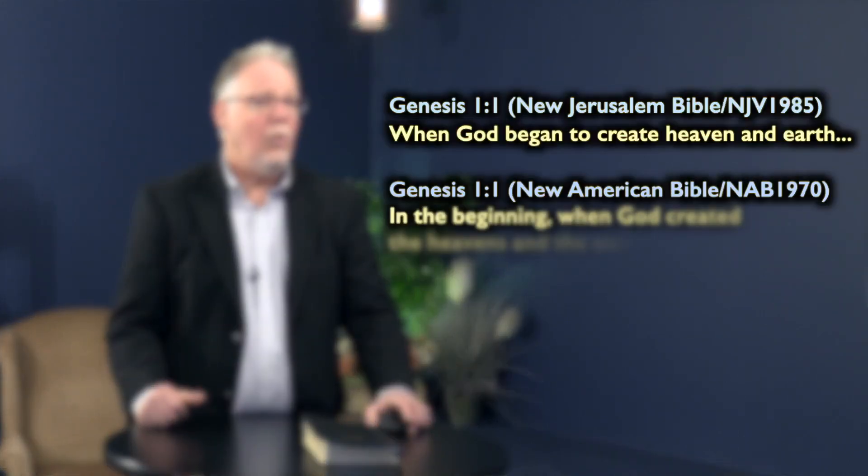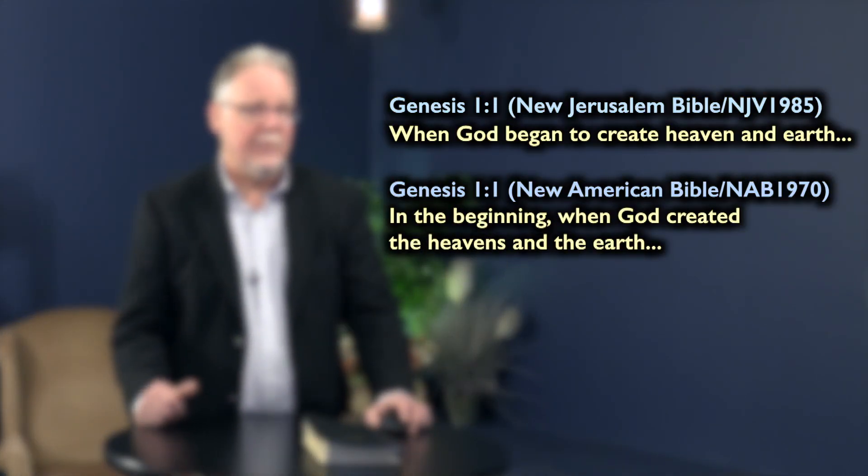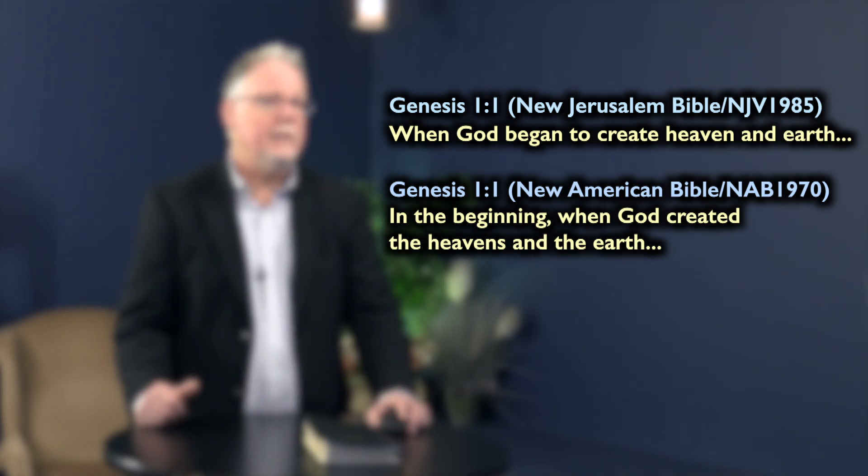Some modern translations actually translate Genesis 1:1 as "when God began to create heaven and earth" — that's the New Jerusalem Bible — or "in the beginning when God created the heavens and the earth," which is the New American Bible. But it's important to note that this change in translation means that the creation of the heavens and the earth in Genesis 1:1 is no longer the first act of creation. This interpretation changes theology because Genesis 1:1 no longer supports the doctrine of creation ex nihilo.